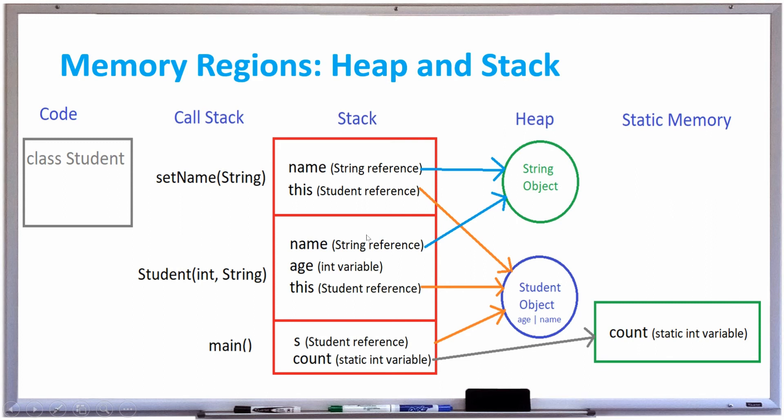And then, you may call the set name method inside class student, and this one will reference the string that's on the heap, and the student object that's also in the heap, using name to reference the student's name, and this reference to reference the student's object.